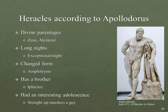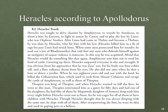Heracles also had an adolescence. One of the interesting things he did was straight-up murder a guy — the guy hit him and called him nasty names, and Heracles said 'I've got this lyre from Apollo, I'm going to beat you to death with it.' He was also taught by everyone under the sun: taught to drive chariots by Amphitryon, to wrestle by Autolycus, to shoot a bow, to fight in armor, to play the lyre. After Linus had come to Thebes and become a Theban, he was slain by Heracles who hit him with his lyre — Heracles killed him in a fit of rage because Linus had struck him. Heracles is not the most stable in Apollodorus — this is a theme that will reoccur.